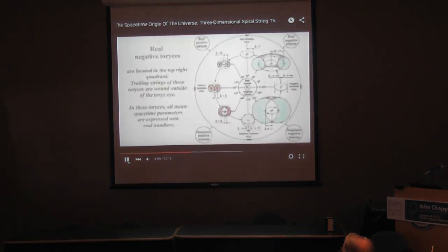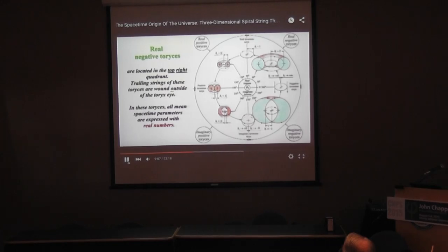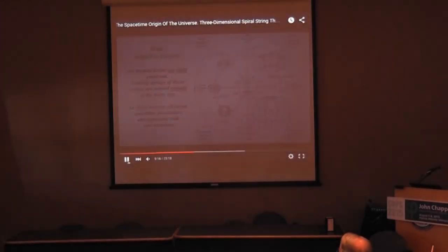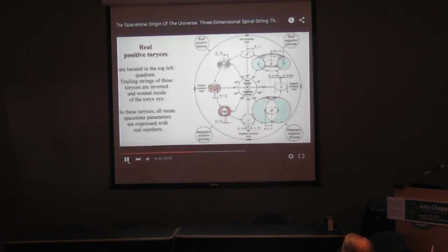Real negative Tauruses are located in the top right quadrant. Trailing strings of these Tauruses are on the outer side of the Tauruses, and all mean spacetime parameters are expressed with real numbers. Real positive Tauruses are located in the top left quadrant. Trailing strings of these Tauruses are inverted and wound inside the Tauruses, and all mean spacetime parameters are expressed with real numbers.